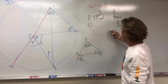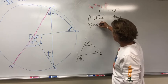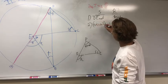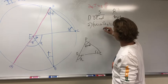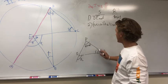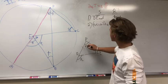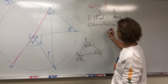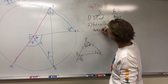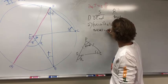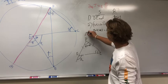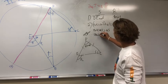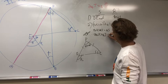We know that angle K plus angle J plus angle S equals angle Q. Since it's an isosceles triangle, the two sides are the same, so angle K plus angle J equals angle S. Therefore, 2·angle K plus angle J equals angle Q.